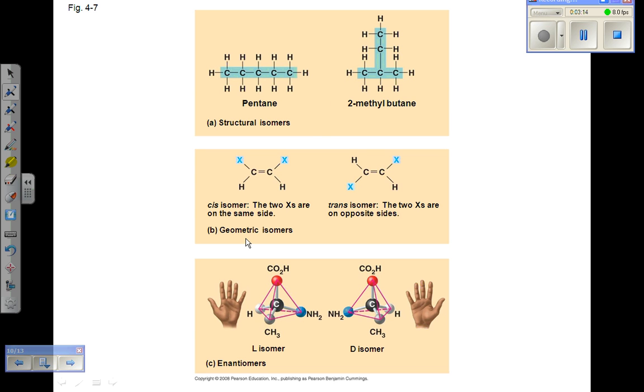Geometric isomers are compounds with the same atoms, but which differ in their arrangement around a double bond.